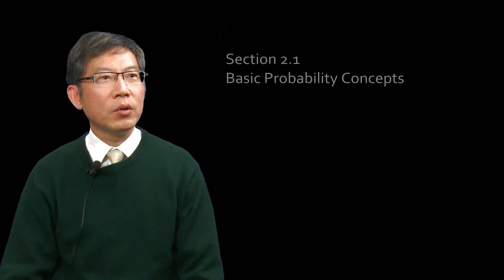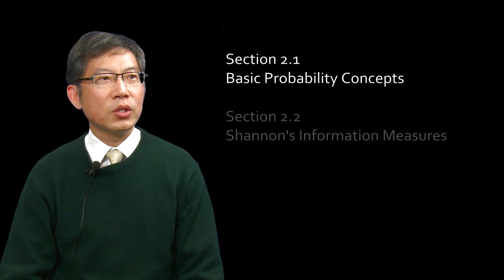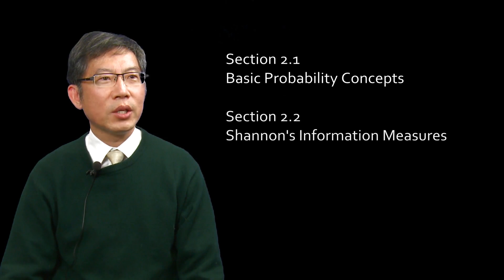Section 2.1 will be a review of some basic probability concepts. Section 2.2 introduces Shannon's Information Measures. These are fundamental measures that will be used throughout the course.